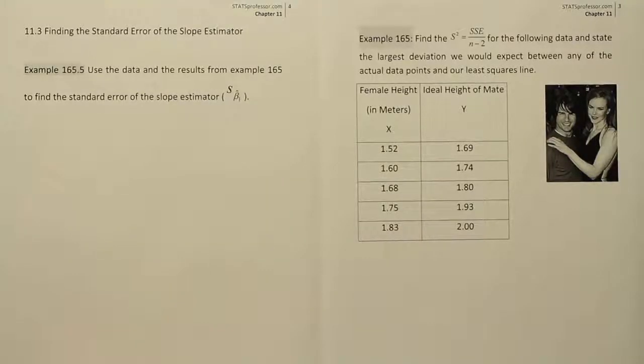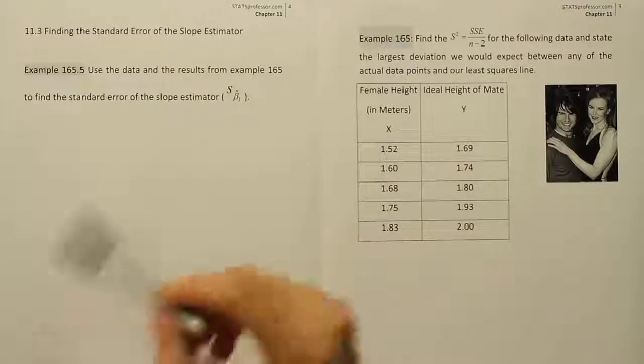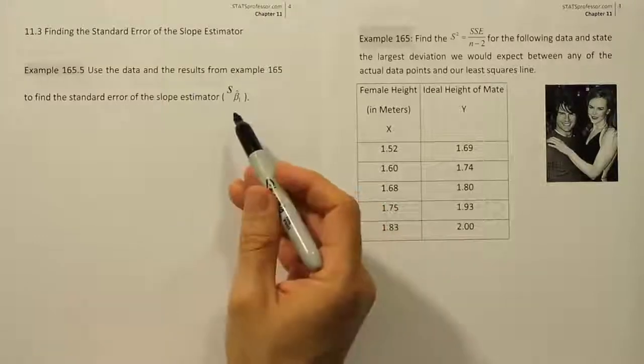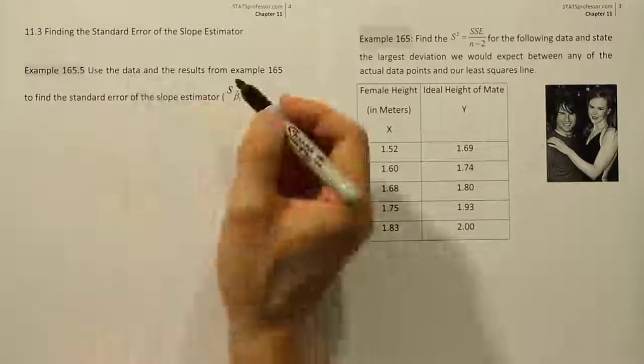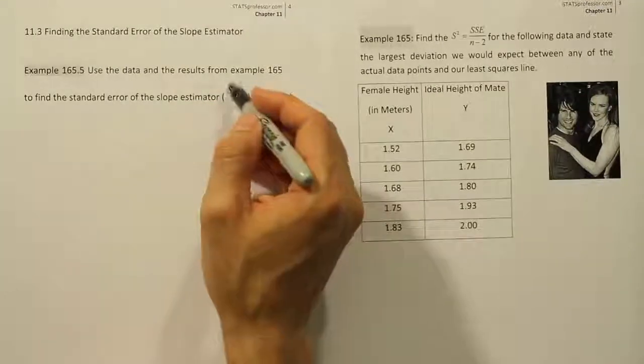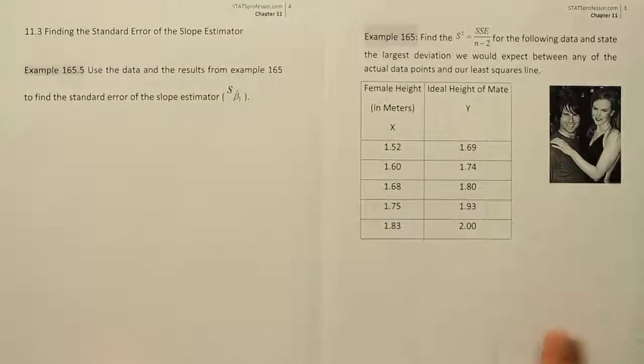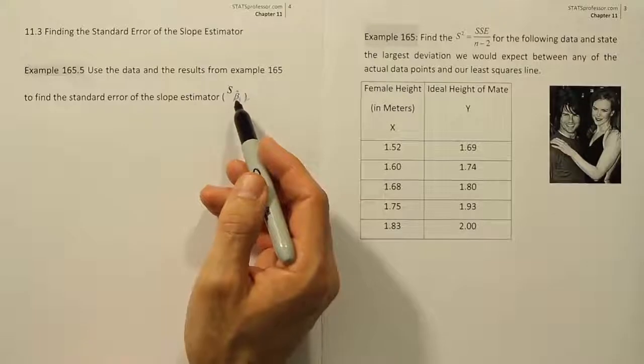Okay, so what we want to do here is simply take the numbers that are important to us from problem 165 in order to calculate this quantity. Let me just tell you the formula for this quantity. If you want to estimate this quantity sigma beta 1 hat, or in other words the standard error for the slope estimator beta 1 hat.